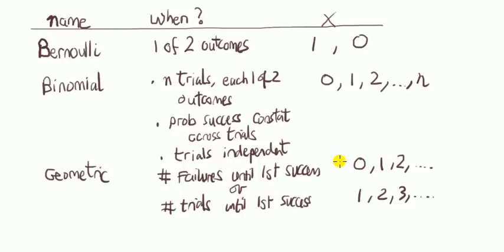So, that sounds like it's a geometric, doesn't it? But, in fact, it's not. And that's because the probabilities of not being sick falls as you drink more and more cans. In other words, the probabilities do not remain constant. And that's because the conditions for the geometric are similar here to the one for the binomial.